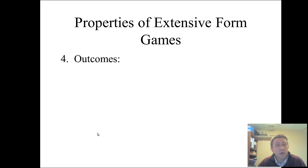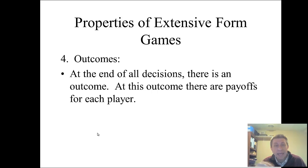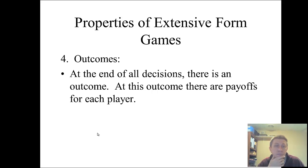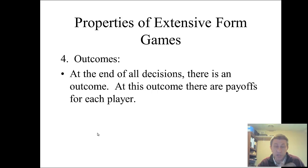The outcomes of the game are written at the end of all the decisions. You'll have a decision node, the various branches, other possible decision nodes, more branches, and by the time you're done with all of those at the bottom, that's the outcome. You write in the payoffs for each player, similar to how you would write them into a payoff matrix.